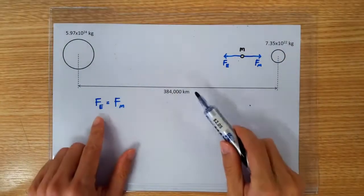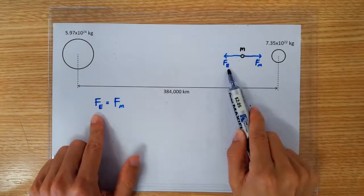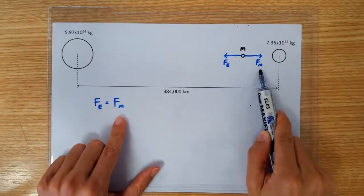So, we are solving for the case when the magnitude of the Earth's gravitational pull is as strong as the Moon's gravitational pull.